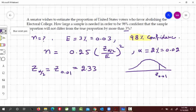Z sub alpha by 2, so this would be the cutoff point, Z sub 0.01, where this area is 0.01. And then remaining 0.99 would be this area. From the table, we see that when the area on the left is 0.99, that Z value is 2.33. You can verify this.